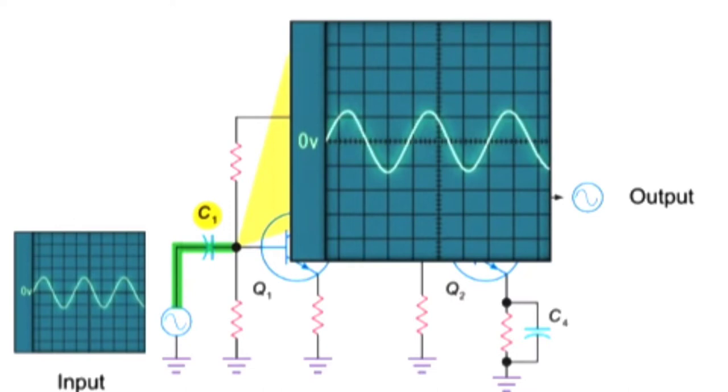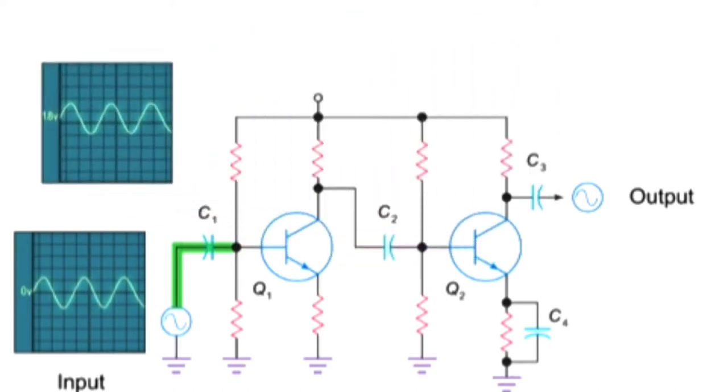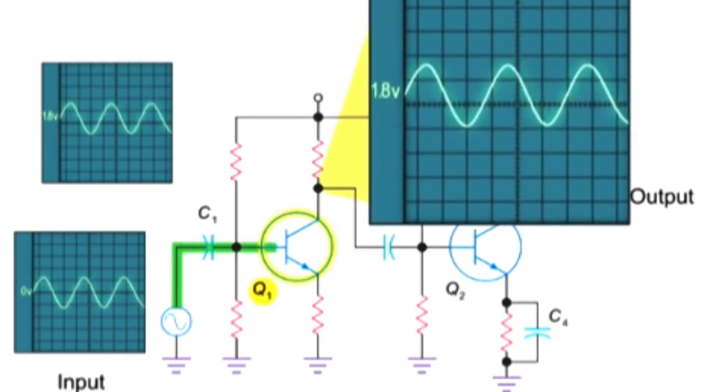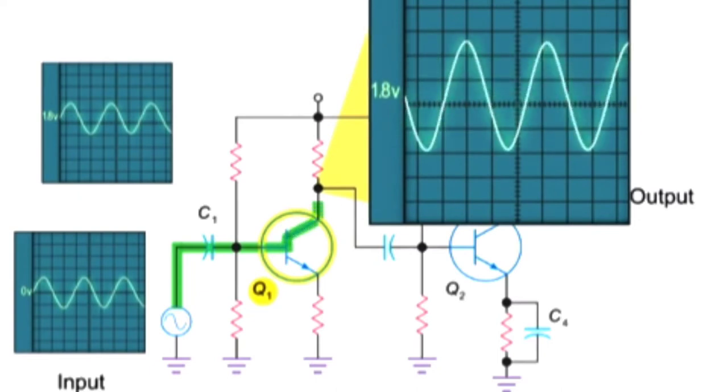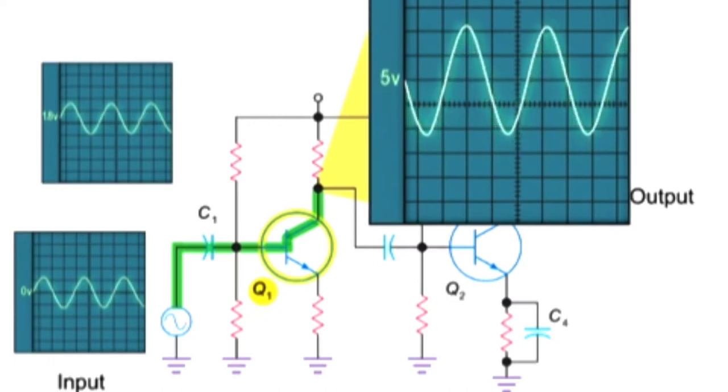However, entering the circuit will add a small DC value of 1.8 volts. The signal next passes through the first transistor, Q1. This process produces a larger and inverted AC signal at the collector and also adds a DC voltage of 5 volts.